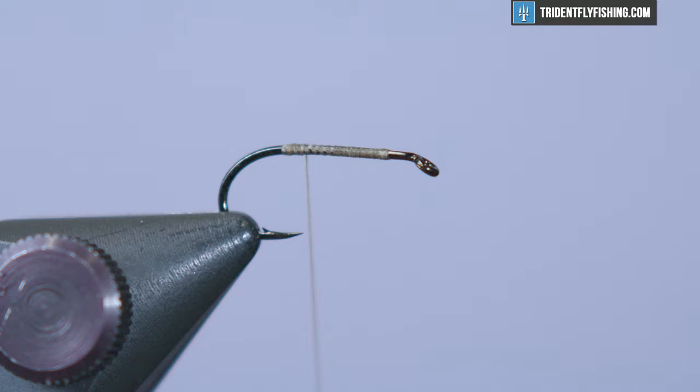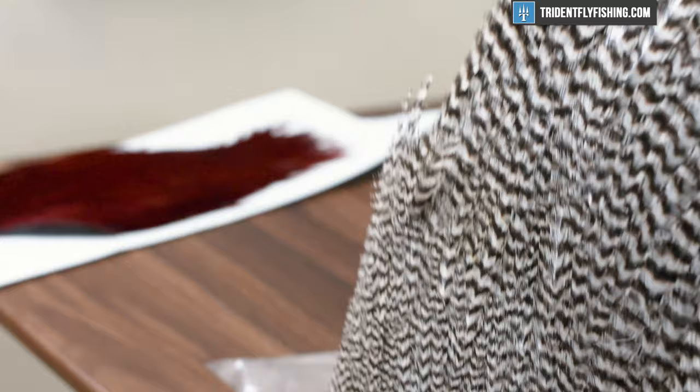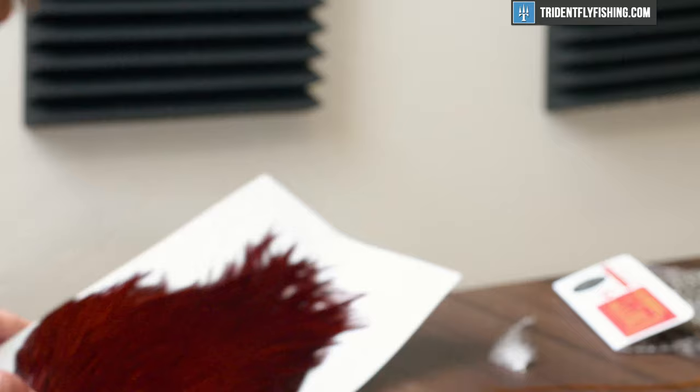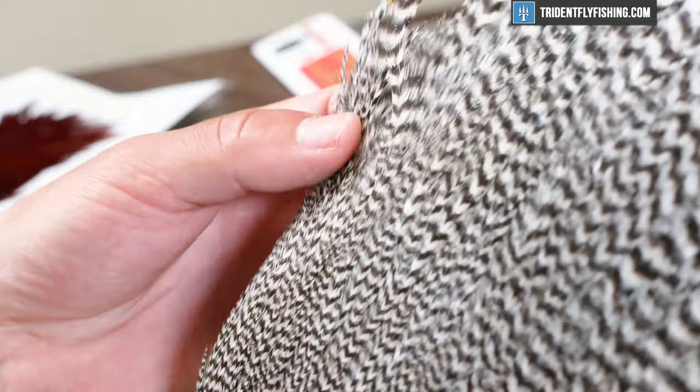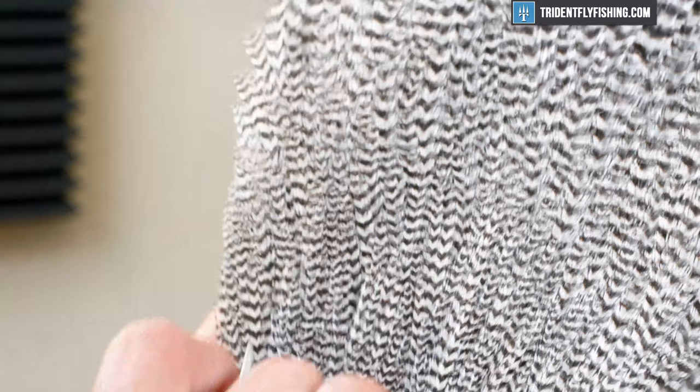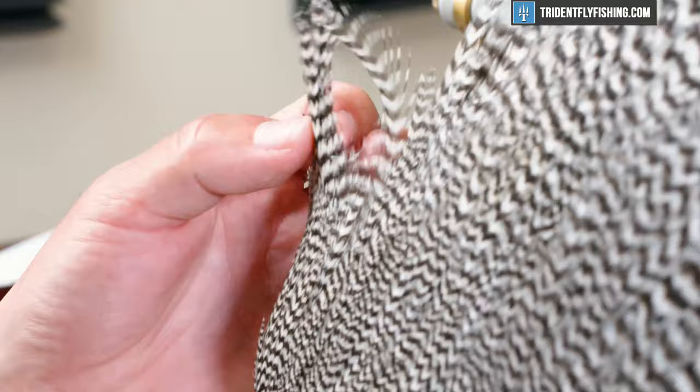Once we get that thread base laid down, we're gonna roll right into some tailing material. For the tail, we're using a combo of grizzly and brown hackle fibers. This comes from a neck hackle and when you're choosing your feathers, I like to get them from the spade area, more or less this area right here, because those have the longest and stiffest fibers for your tails on dry flies. That goes for any dry fly.